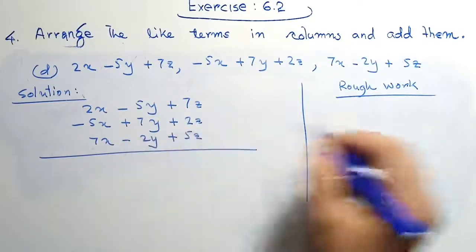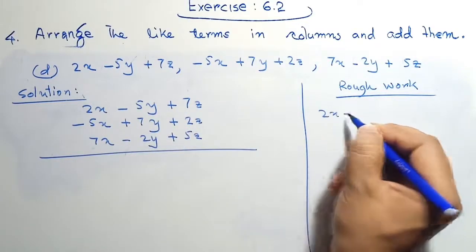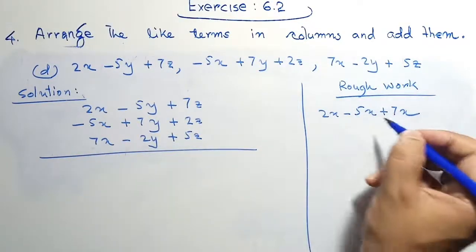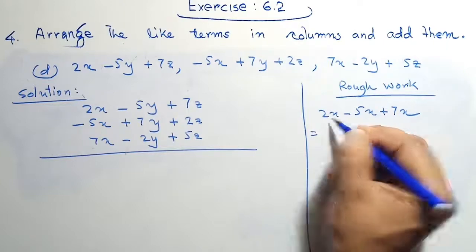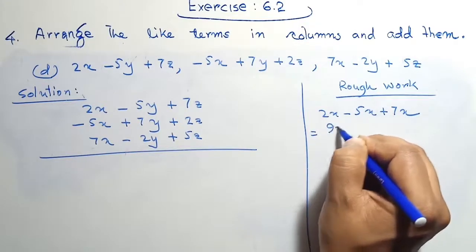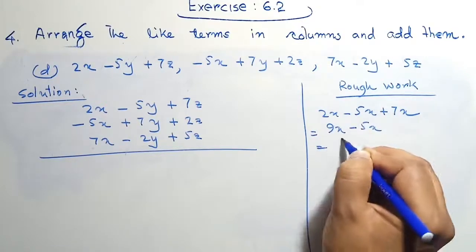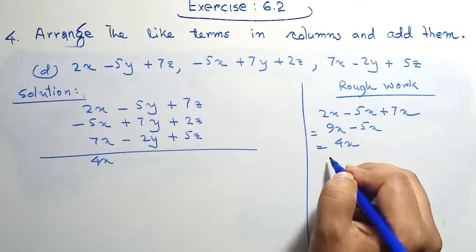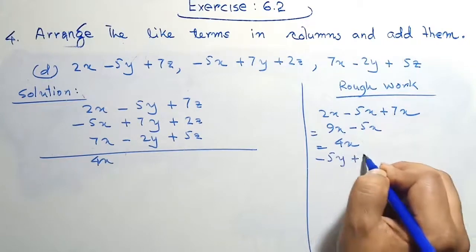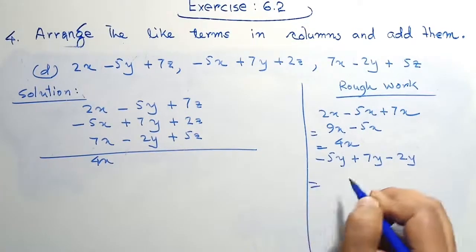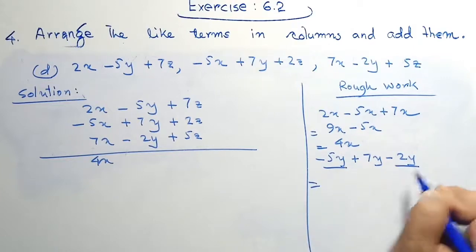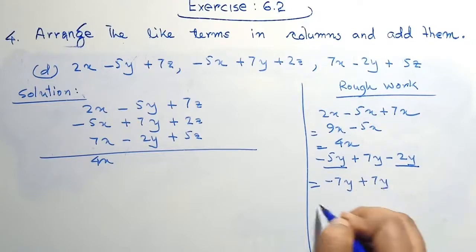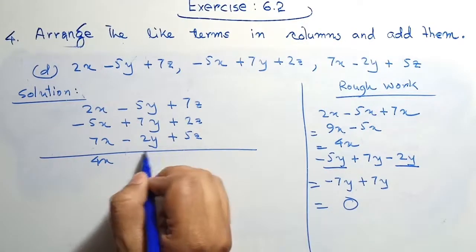The sum of the value of x will be 2x minus 5x plus 7x. Here no sign, therefore we write positive sign. So 2x plus 7x equals 9x minus 5x. Therefore 4x is our value. Again the value of y will be 5y plus 7y minus 2y. So minus 5y minus 2y equals minus 7y, and plus 7y. Therefore the value will be 0 — no need to write any value here.